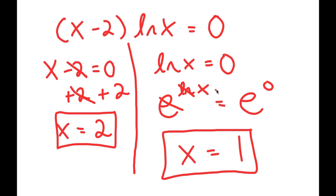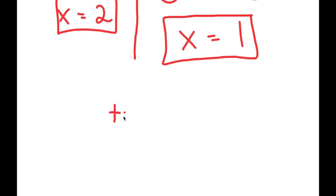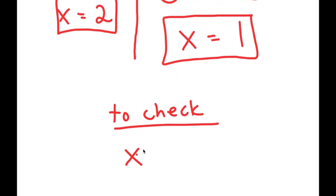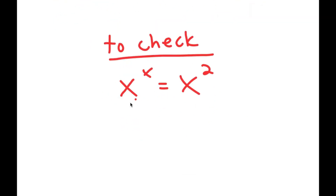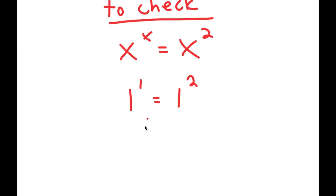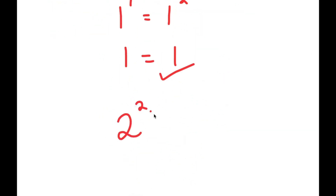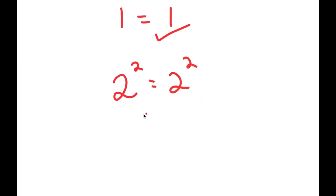Now that I have two solutions, I'm going to check if they're correct. My equation is x to the power of x equals x to the power of 2. Checking x equals 1: 1 to the power of 1 equals 1 to the power of 2 — both sides equal 1, so this is correct. Checking x equals 2: 2 to the power of 2 equals 2 to the power of 2 — both sides equal 4, so this is correct as well.